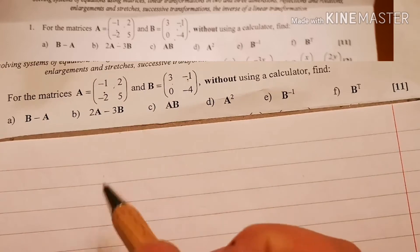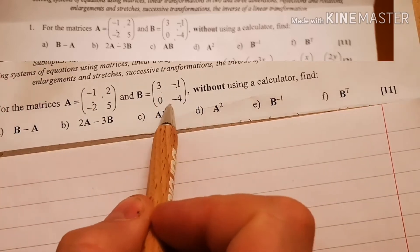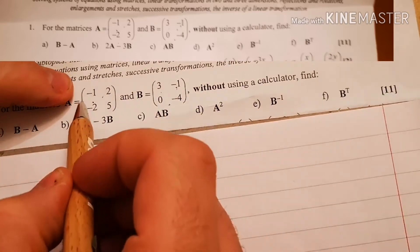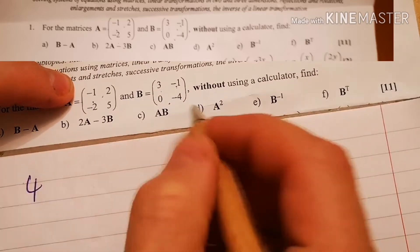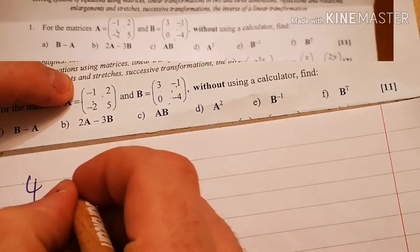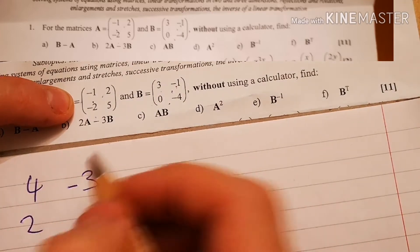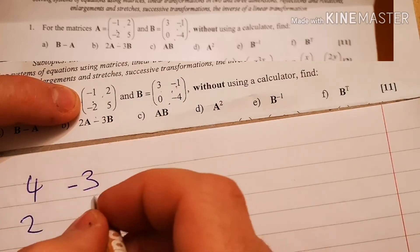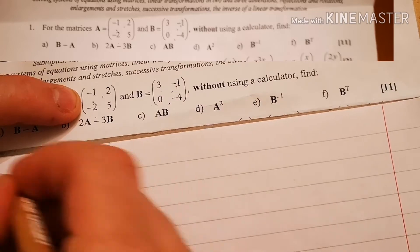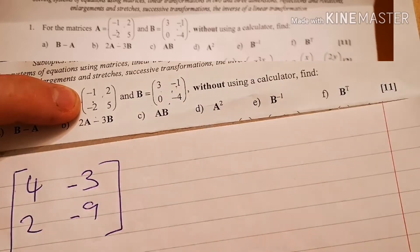Alright, B minus A. It's quite nice, so it's just my value of B minus my value of A. So 3 minus minus 1, which is 4. Minus 1 minus 2, which is minus 3. 0 minus minus 2, which is 2. Minus 4 minus 5, which is minus 9. Okay, B minus A. Good.